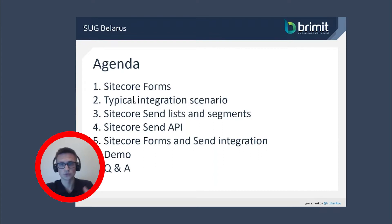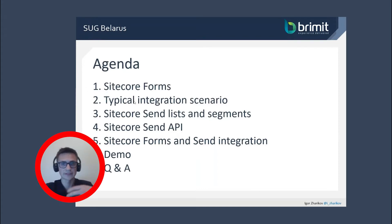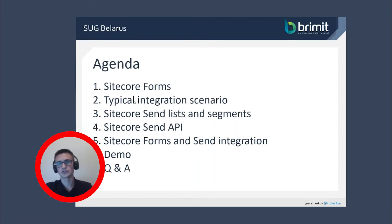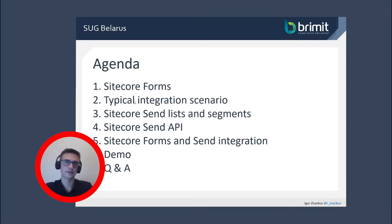After that, we will review Sitecore Send mailing list segments — this is the target system where we're going to send our data. To do it, we need to inspect the Sitecore Send API, and then we will check the integration between Sitecore Forms and Sitecore Send itself. After that, I will show you the demo and answer your questions.